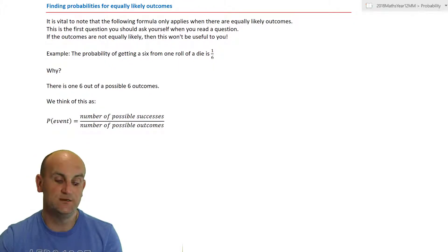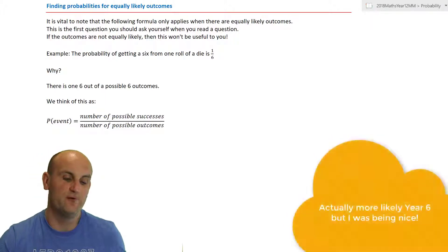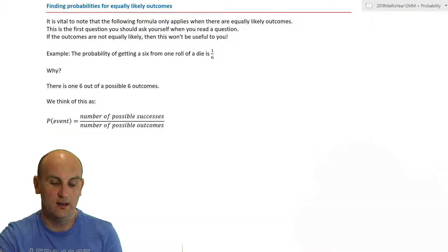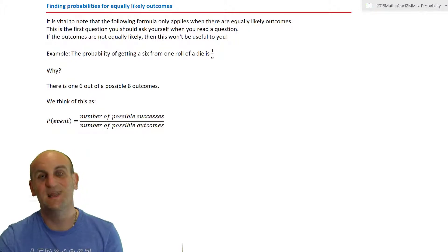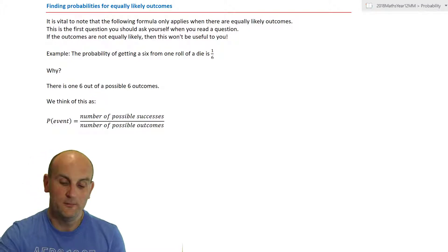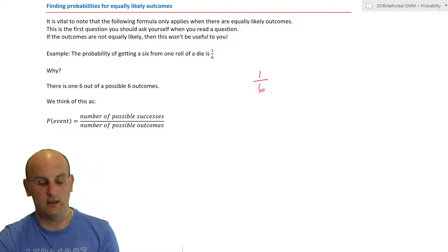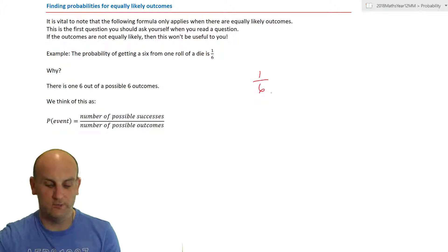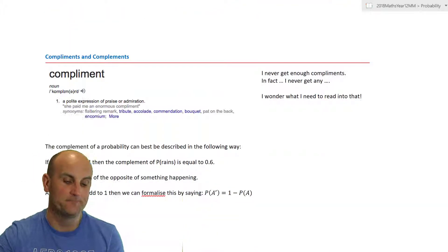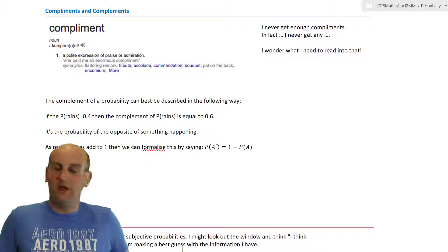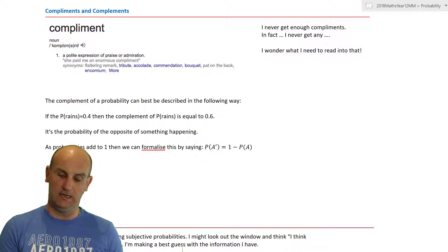There's much more on tree diagrams coming up, particularly in the next lesson on conditional probability. The next section covers finding probabilities for equally likely outcomes — really year 7 math. The key point: this formula only applies when there are equally likely outcomes. For example, the probability of getting a six on one die is one over six, because there is one six out of six outcomes.